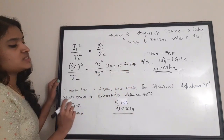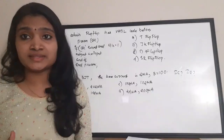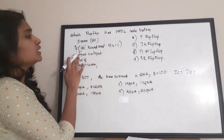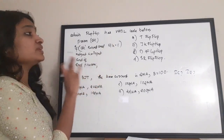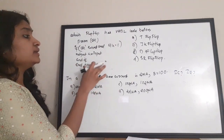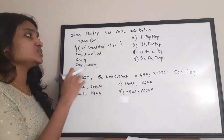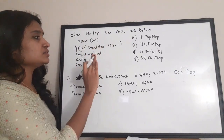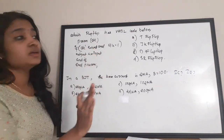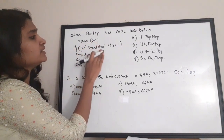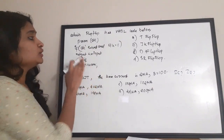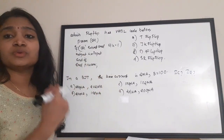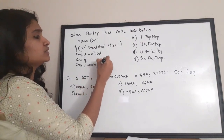Option D, 0.707 ampere, is the correct answer. Next question: which flip-flop has the VHDL code — process(clock), if clock'event and clock = '1', output <= input, end if, end process? Even without knowing VHDL, reading the statements: when clock equals 1, output equals input. This corresponds to a D flip-flop.